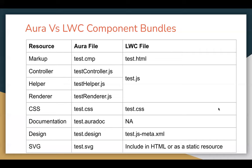If you compare Aura and Lightning Web Component bundles, you can see the comparison. In Aura, for markup we have test.cmp; for controller, test.controller.js; for helper, test.helper.js; for renderer, test.renderer.js. So controller, helper, and renderer are all written in JavaScript. If you have worked with Aura component already, you can relate what controller, helper, and renderer are.